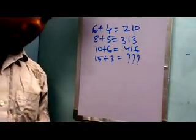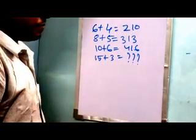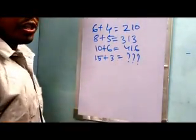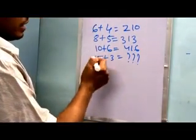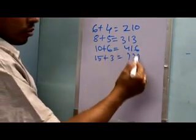Hello everybody, welcome to another logic solving session. Just see the board here. I have written an equation here. The last row of the equation is 15 plus 3 equals question marks.